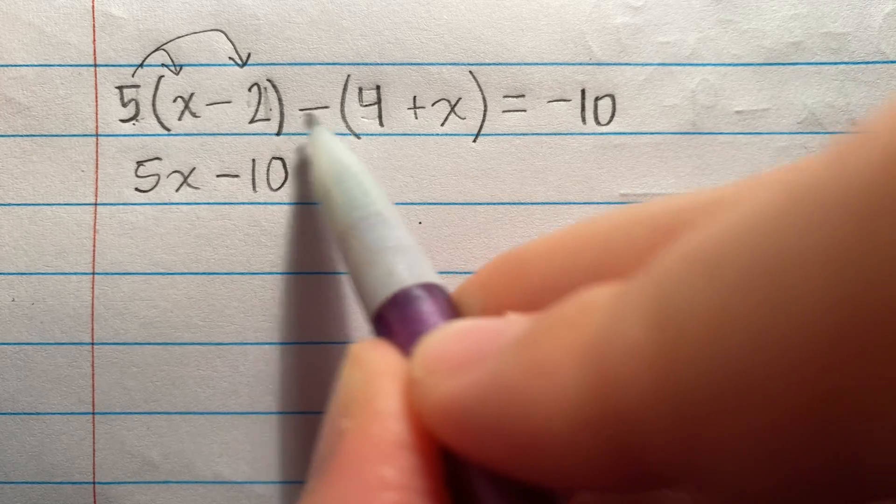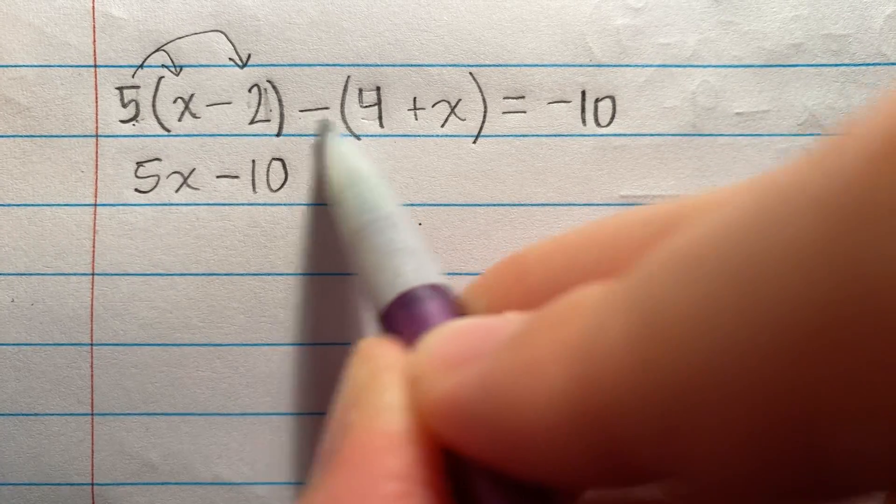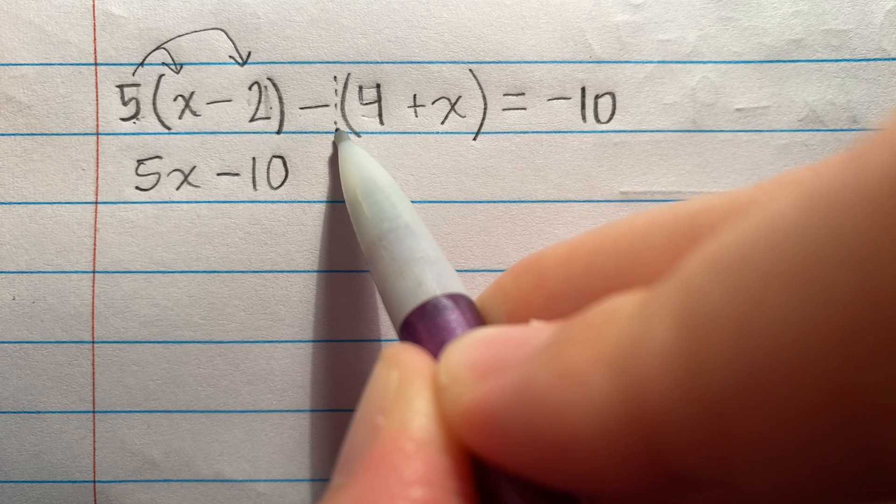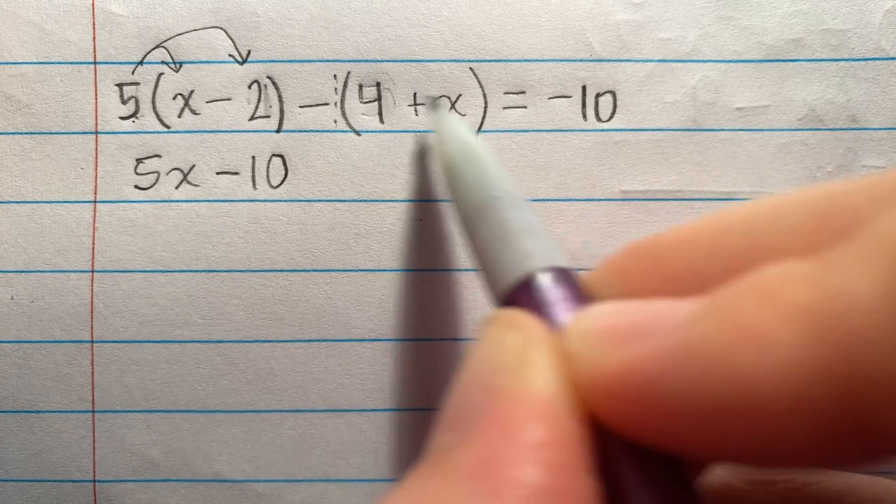Okay, now here. What's this guy? This is a negative 1. It's an invisible negative 1 being multiplied by everything inside these parentheses. So I'm still distributing.